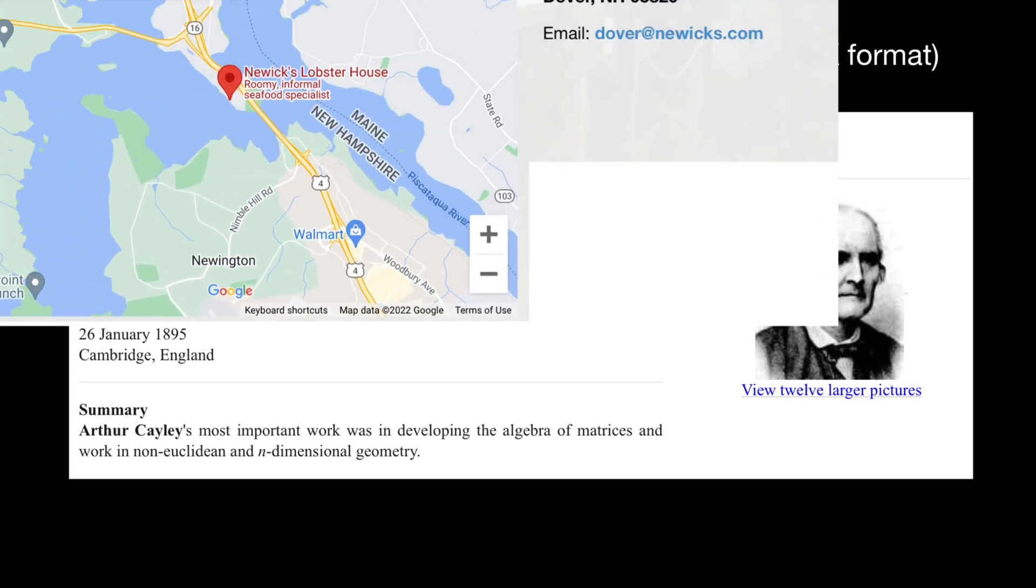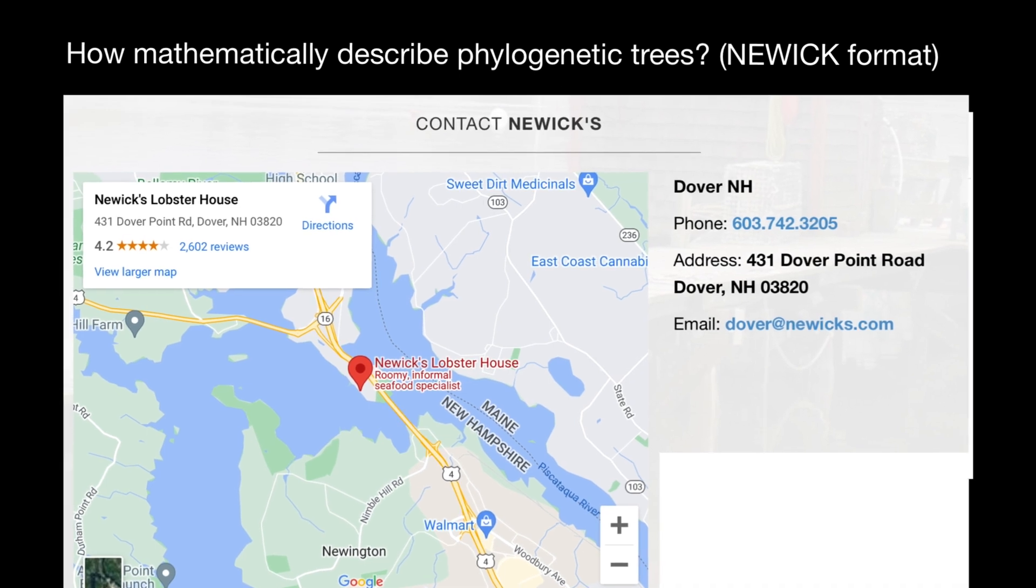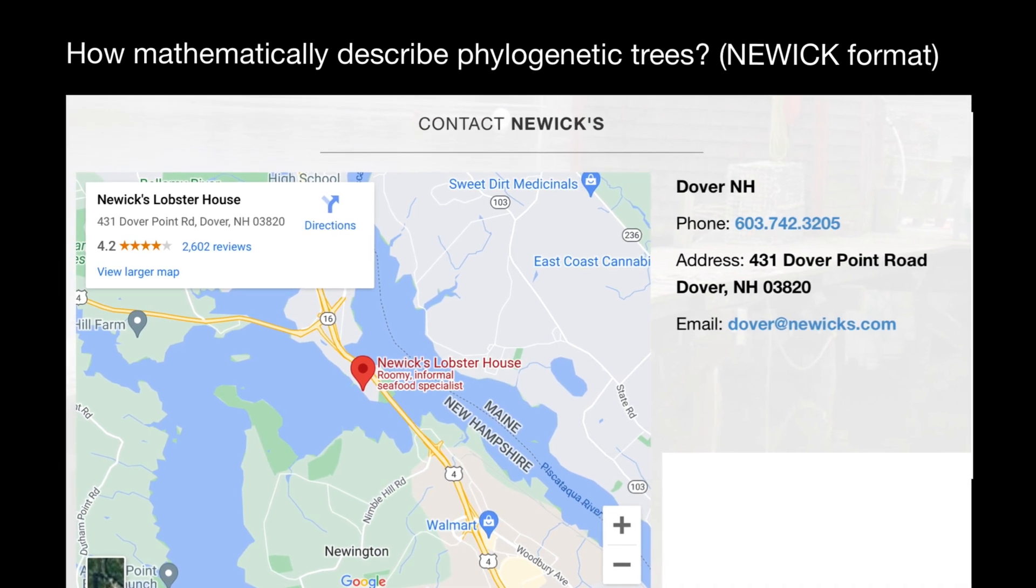100 years later, a group of mathematician scientists met at a restaurant in Dover, and the restaurant name was Newick Lobster House. This group of scientists met twice at this restaurant.